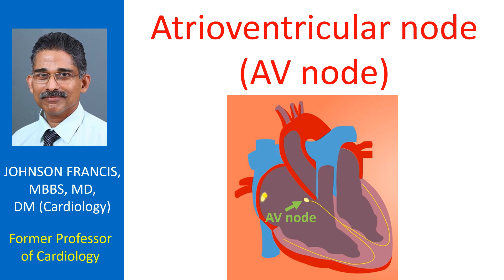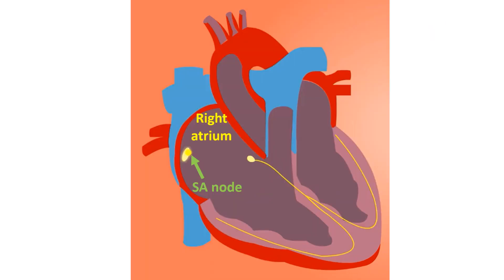The atrioventricular node – AV node – is an important part of the electrical conduction system of the heart. Normal functioning of the heart needs regular signal generation and transmission. Signal generation is usually the function of the SA node – sinoatrial node – a small structure situated in the upper part of the right atrium. The SA node is the natural pacemaker of the heart, generating regular electrical signals at a speed depending on the energy needs of the body. It is under the control of the brain through the nervous system.